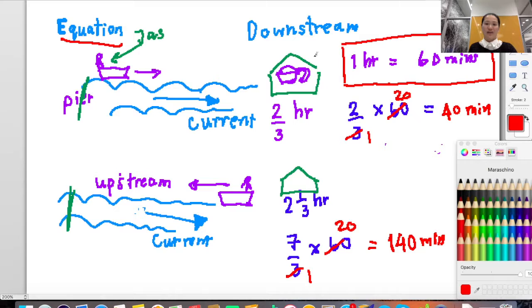It makes sense because if going downstream, you go faster, so you spend less time, just 40 minutes. But if you go upstream, that means you have to paddle opposite to the current, so you spend more energy and more time, 140 minutes.